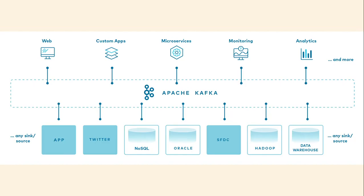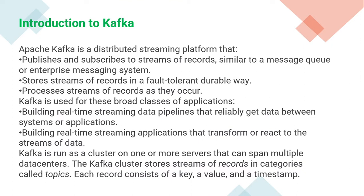In a typical Kafka setup we have multiple producers and multiple consumers. Using Kafka you can write to databases, and Kafka can be integrated with different microservices. You can use it with web event-driven architecture. Kafka is a distributed streaming platform. It publishes and subscribes to streams of records, similar to a message queue or enterprise messaging system. It stores streams of records in a fault-tolerant and durable way, and it processes streams of records as they occur.